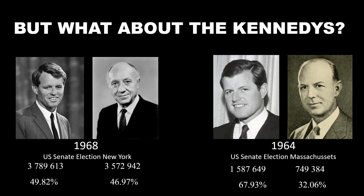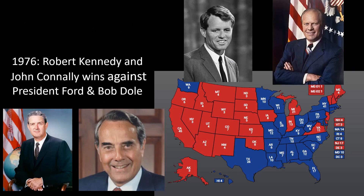His margin of victory is quite similar to that of Johnson in the concurrent presidential election. In 1976, with Richard Nixon having resigned over Watergate, Gerald Ford is the incumbent President. He runs for re-election with Bob Dole as his running mate. Robert Kennedy wins the Democratic nomination, and he chooses former Texas Governor John Connolly. They are able to defeat Ford and Dole with a narrow victory in the popular vote and the electoral college.